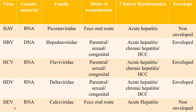Hepatitis E virus is an RNA virus belonging to the Caliciviridae family. The mode of transmission is the feco-oral route — contaminated food and water. The clinical manifestation is acute hepatitis, acute inflammation of the liver, and it is a non-enveloped virus.